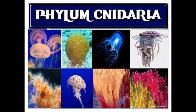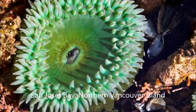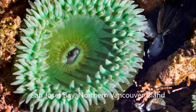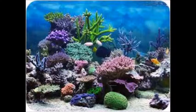Now we know about Porifera. We're moving right along to Cnidaria. The Cnidarians consist of jellyfish, coral, and anemones. The organisms in this phyla are radially symmetrical.